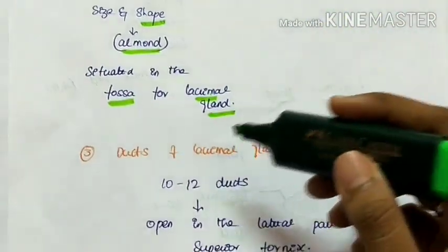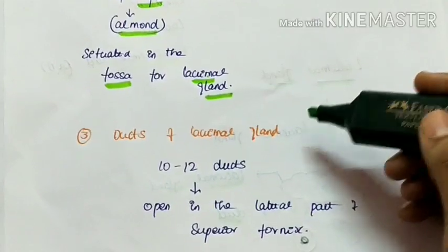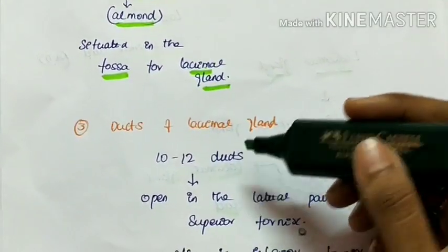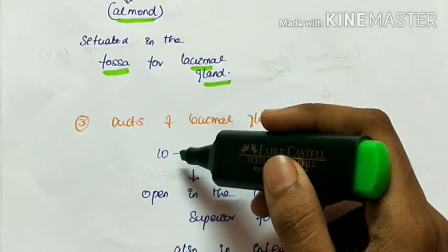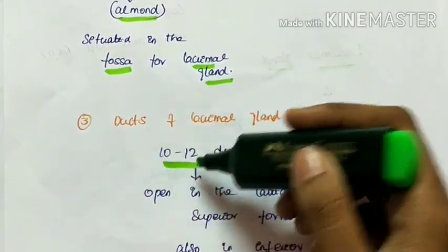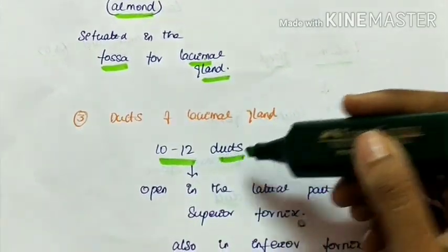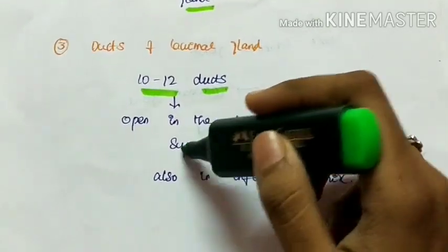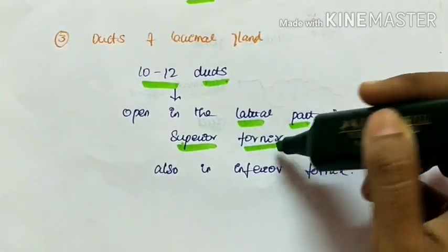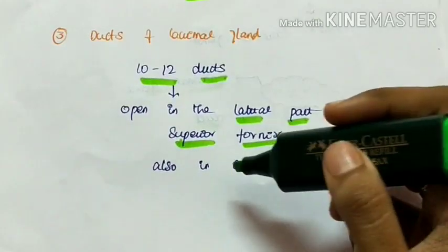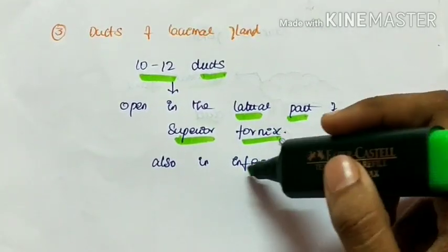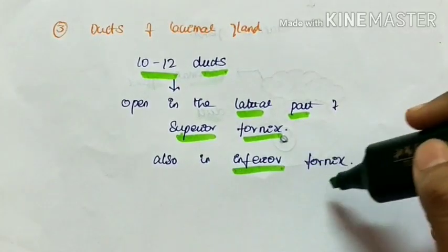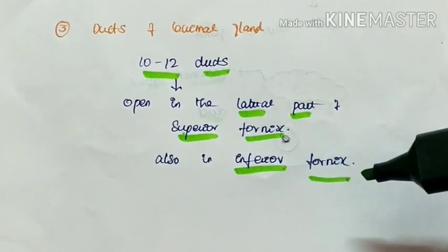The lacrimal gland has an average of 10 to 12 ducts which open in the lateral part of the superior fornix, and some of those also open in the inferior fornix.